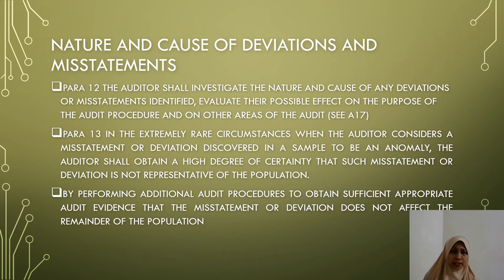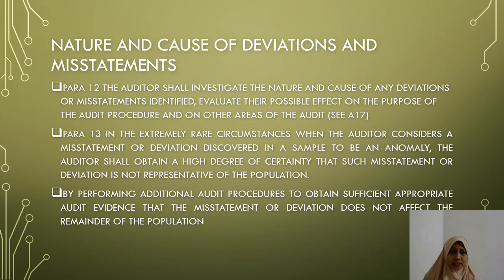Paragraph 13 states that in extremely rare circumstances, when the auditor considers a misstatement or deviation discovered in a sample to be an anomaly, the auditor shall obtain a high degree of certainty that such misstatement or deviation is not representative of the population. Consider whether there is any difference between an anomaly and an outlier. The auditor shall obtain this certainty by performing additional audit procedures to obtain sufficient appropriate audit evidence that the misstatement or deviation does not affect the remainder of the population.